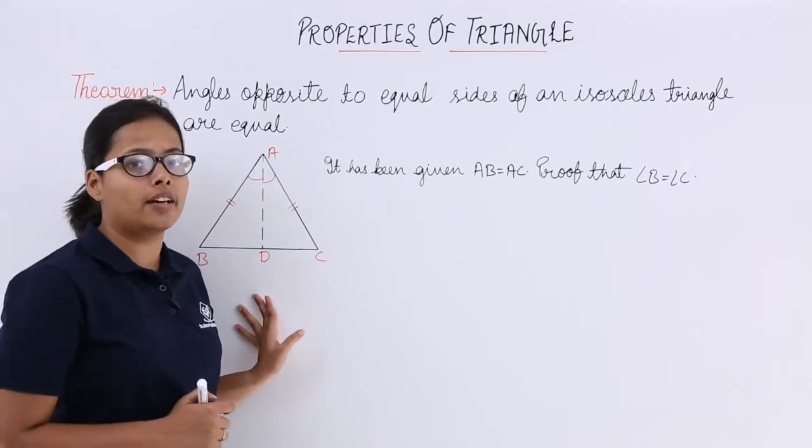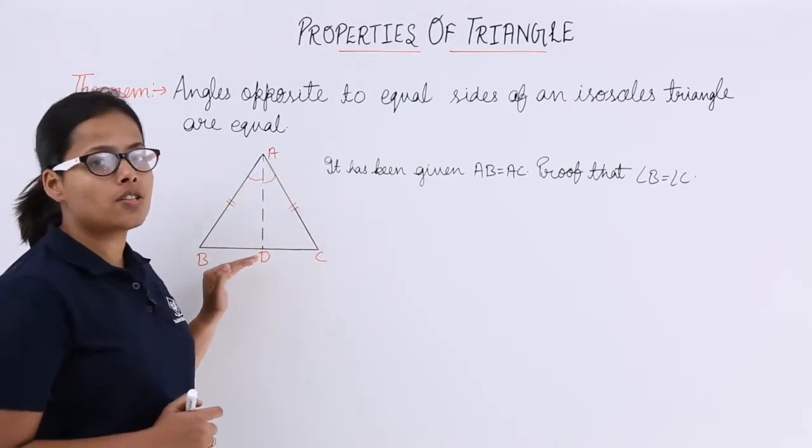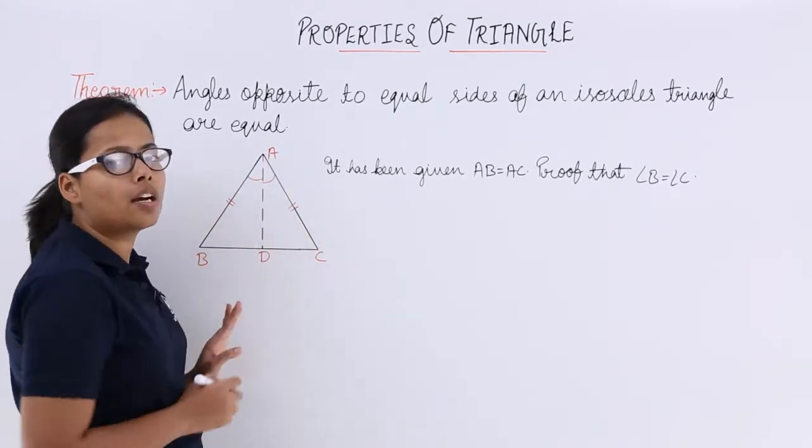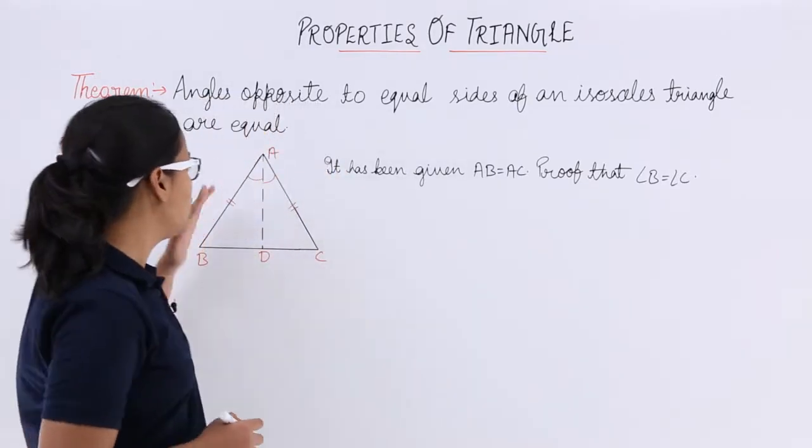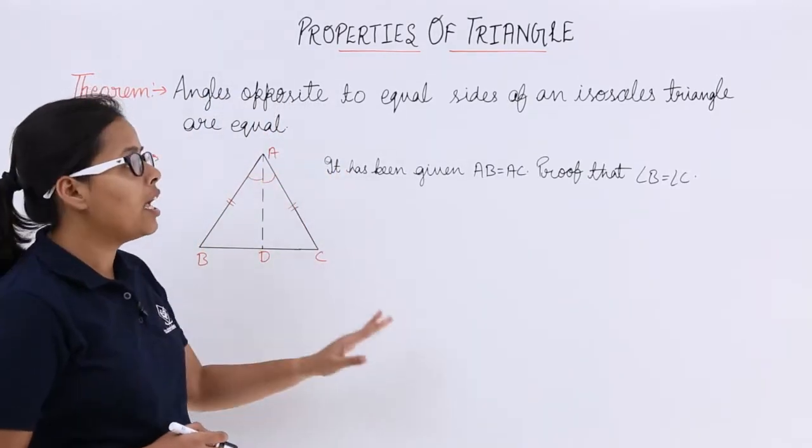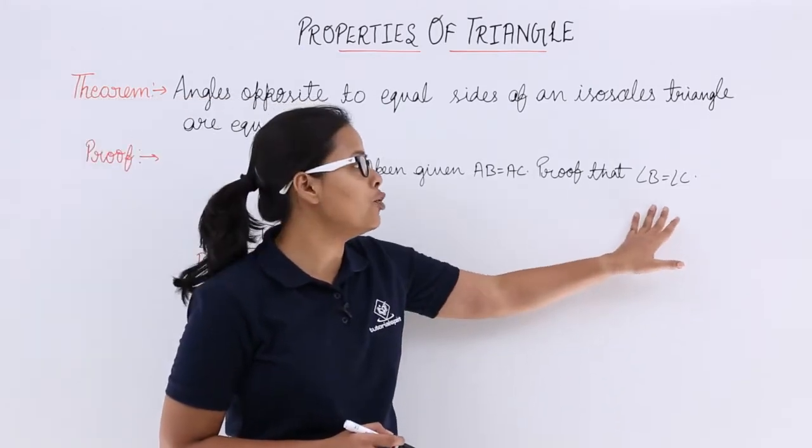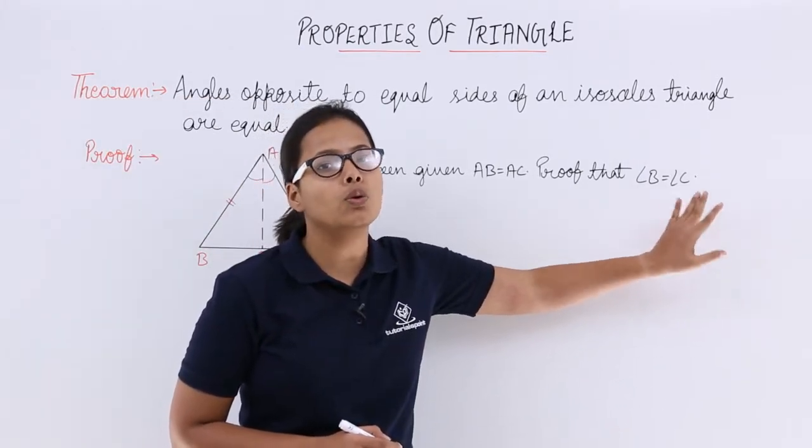I have drawn a triangle here which is an isosceles triangle in which two sides are equal. It has been given that AB is equal to AC. And what you need to prove? You need to prove angle B should be equal to angle C.